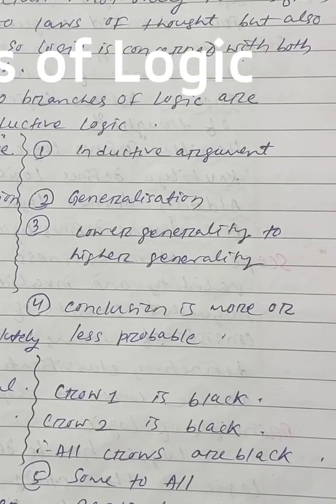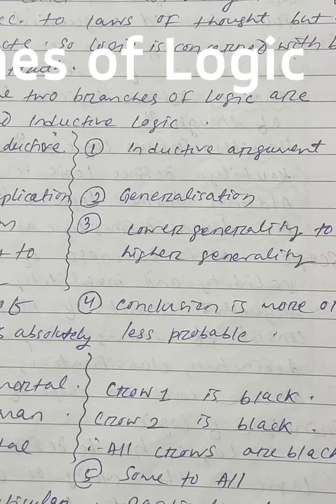In the example of inductive argument, the conclusion is universal. The two premises are: crow one is black, crow two is black. Therefore, all crows are black. That means it passes from particular to universal — from some to all.